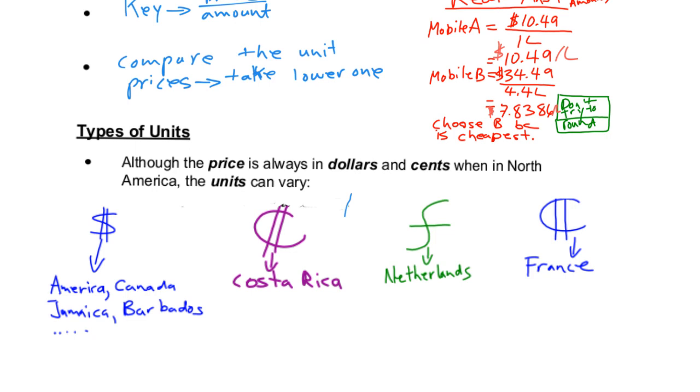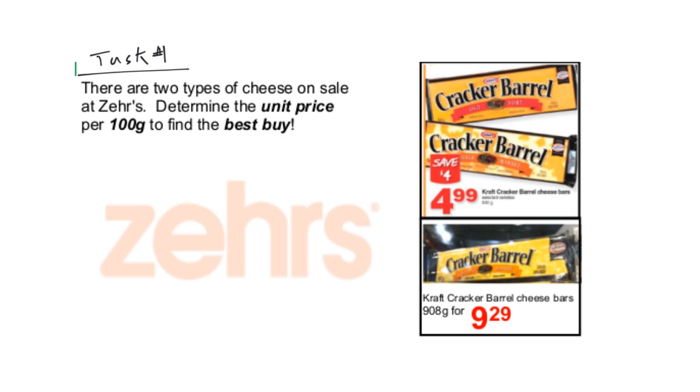Now, let's move on to one example that you can use to do your homework for today. Here is task one. There are two types of cheese on sale. We need to determine the unit price per 100 grams and we're trying to find out which one is the best buy.